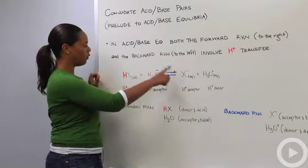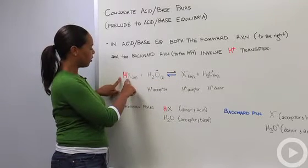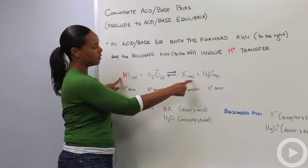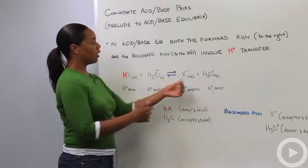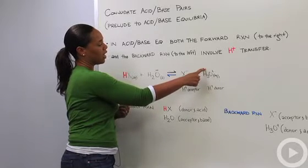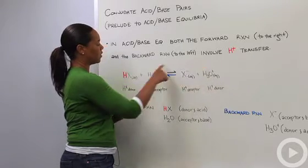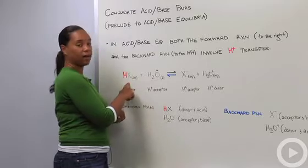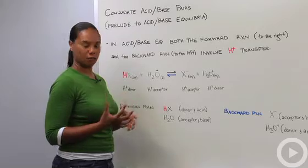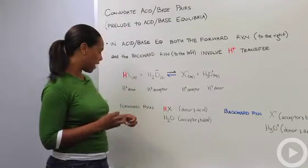So what happened in the forward reaction is water abstracted this proton giving us X minus and H3O plus. Going in the backwards reaction, X minus abstracted the proton from H3O plus to make H2O and HX. You might need to take some time to look at this separately to convince yourself of that.